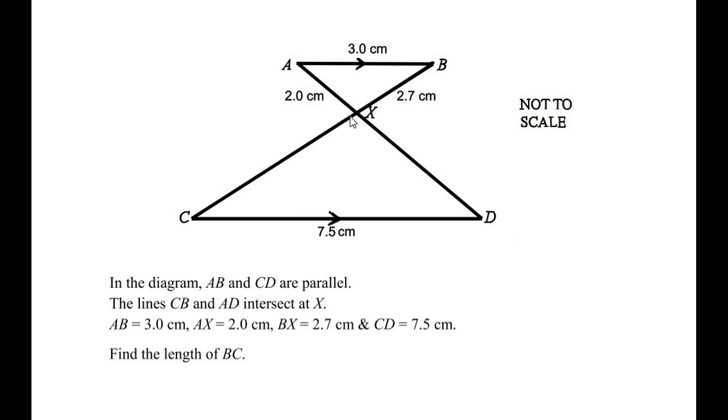The length of line AB is given as 3 centimeters, AX is 2 centimeters, BX is 2.7 centimeters, and CD is given as 7.5 centimeters. Find the length of the line BC.